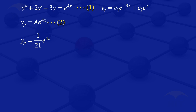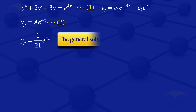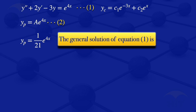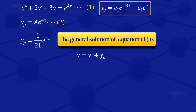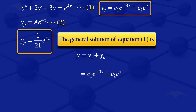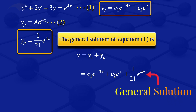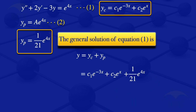We now find the general solution of the ODE, which is y = complementary solution + particular solution. Our complementary solution is c1·e^(-3x) + c2·e^x, and our particular solution is (1/21)·e^(4x). Therefore the general solution is y = c1·e^(-3x) + c2·e^x + (1/21)·e^(4x). This is the general solution of the non-homogeneous ODE.